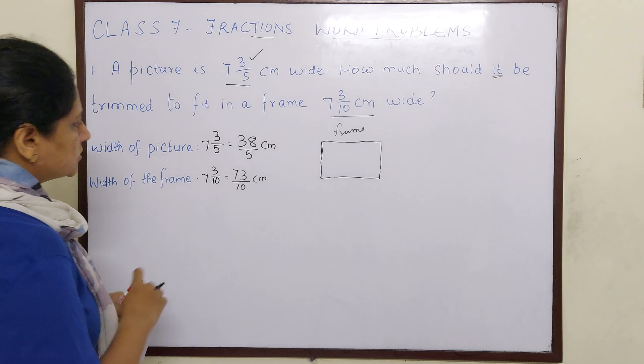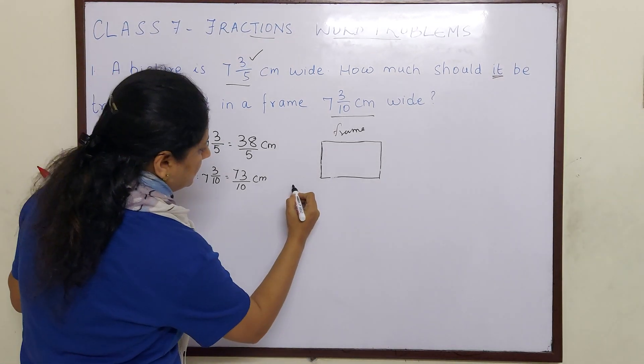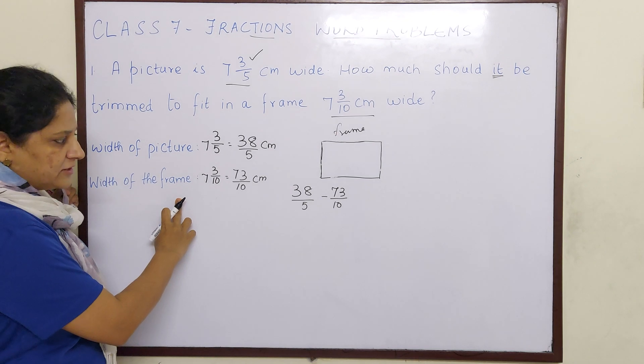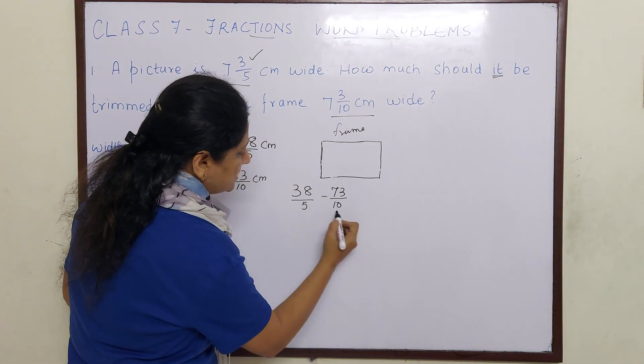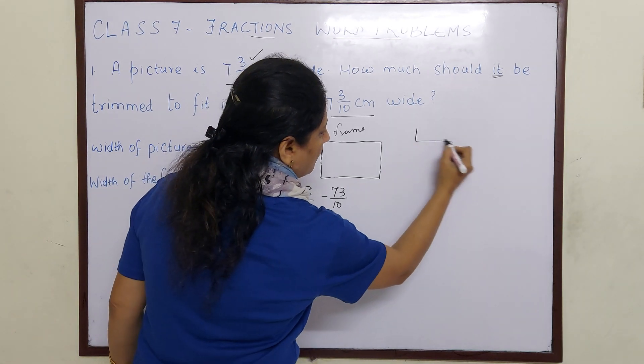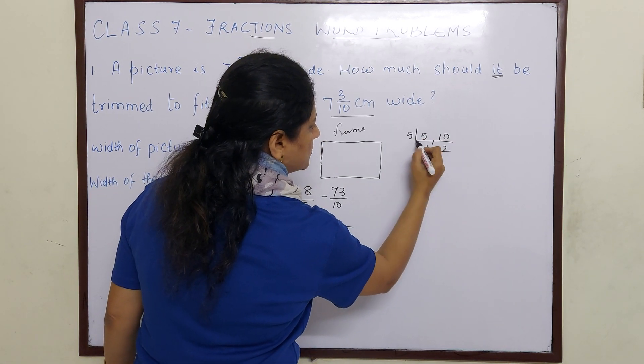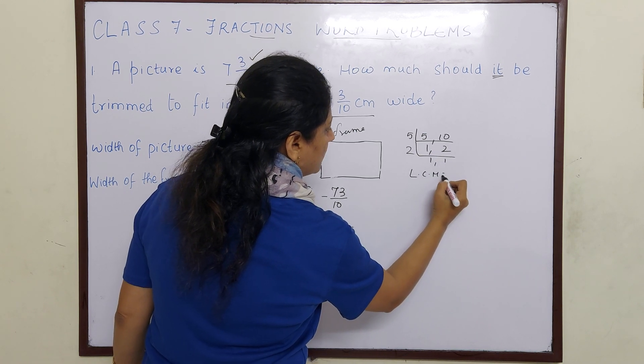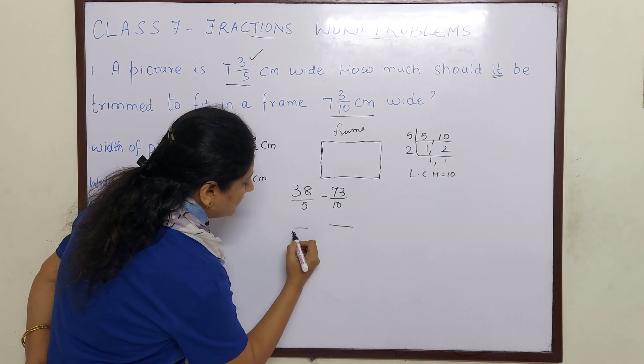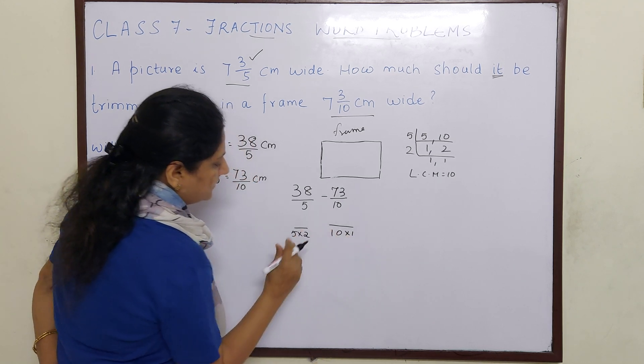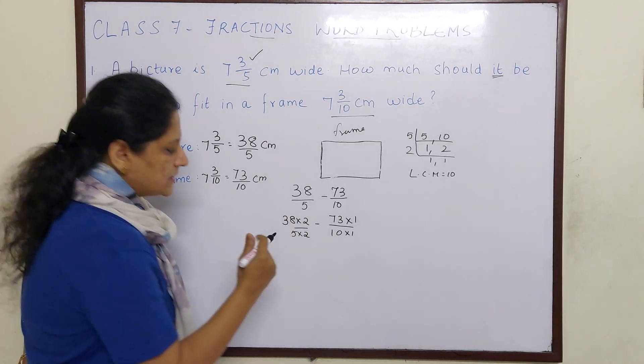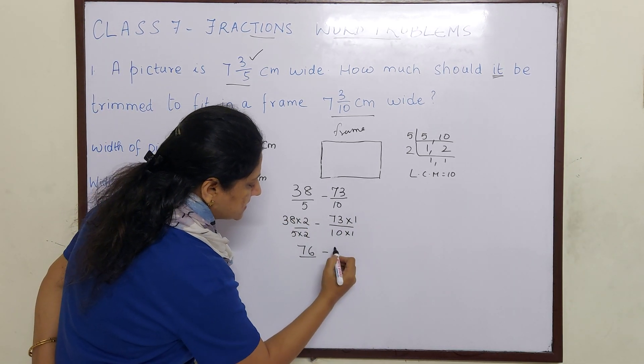Now our job is just to subtract. So let us subtract 38/5 minus 73/10. That is width of the picture minus width of the frame. You will know how much has to be trimmed. If you see children, here the denominators are not equal. So first we have to find LCM. The LCM of 5 and 10 is 10. Now we have to change this improper fraction with denominator as 10. So 5 times 2 is 10, and 10 times 1 is 10.